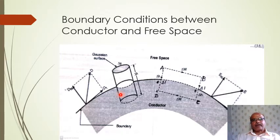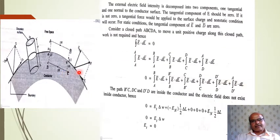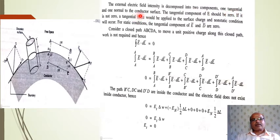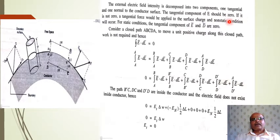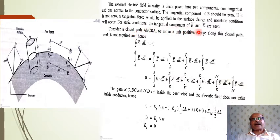Before starting the proof, let us mention the theoretical explanation. The external electric field intensity is decomposed into two components: tangential and normal to the conductor surface. The tangential component of E should be zero — if it is not zero, a tangential force would be applied to the surface charge and a non-static condition would occur. For static conditions, the tangential components of E and D are zero.